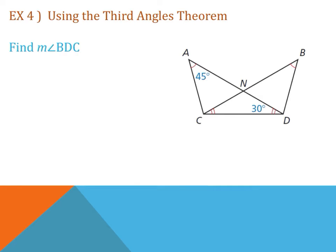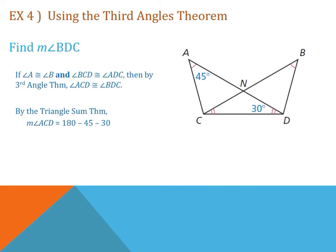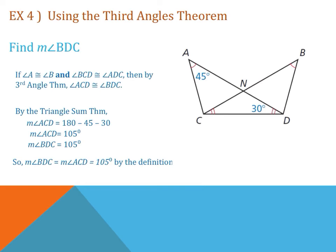Example 4: use the third angles theorem to find the measure of angle BDC. Since angle A is congruent to angle B (by the markings) and angle BCD is congruent to angle ADC, by the third angle theorem we conclude that angle ACD is congruent to angle BDC. By the triangle sum theorem, the measure of angle ACD equals 180° − 45° − 30° = 105°. Therefore, the measure of angle BDC equals 105°, by the definition of congruent angles.